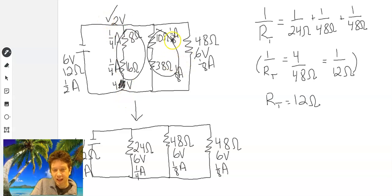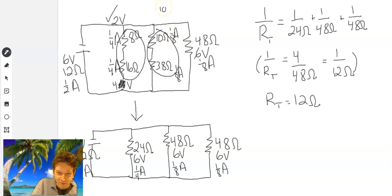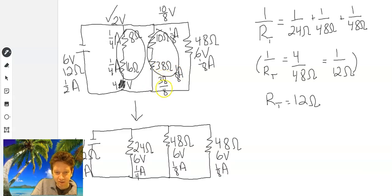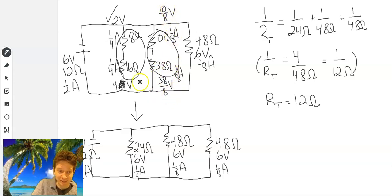And for the other branch: 10 times 1/8 = 10/8 volts, and 38 times 1/8 = 38/8 volts. If you add them: 38 plus 10 is 48, and 48 divided by 8 is 6. So it works.